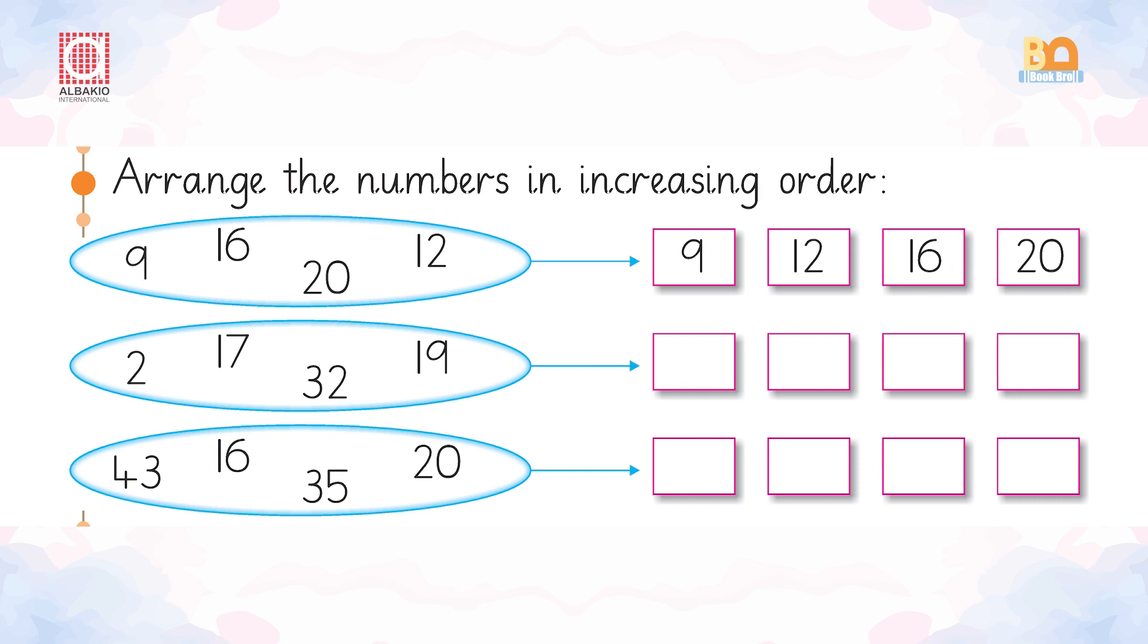What's about the next one? 2, 17, 32, 19. So, we will write 2, 17, 19 and 32.